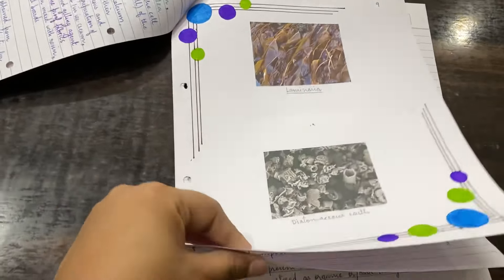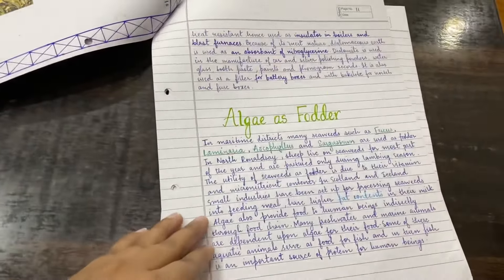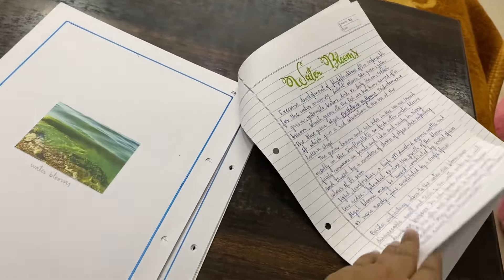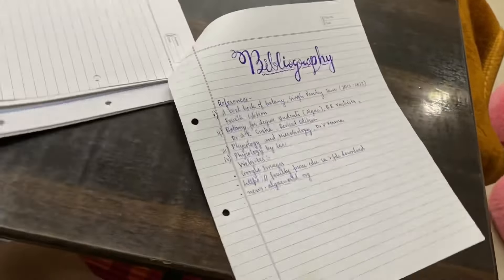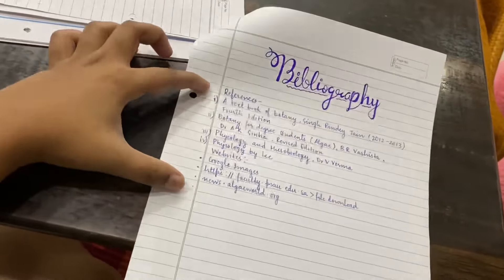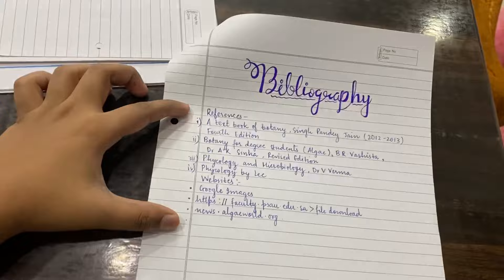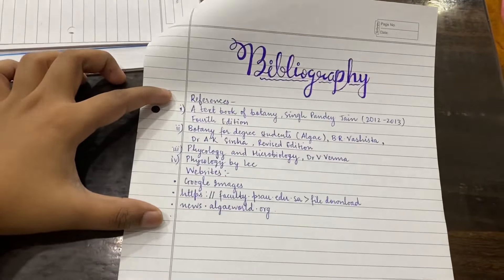Overall, you need to make an assignment in such a way that when you read it yourself, your study will be properly covered and the topic will be properly covered. Last, don't forget to add the bibliography — whether you have a D.U. assignment or any university assignment — add all the references and sources.